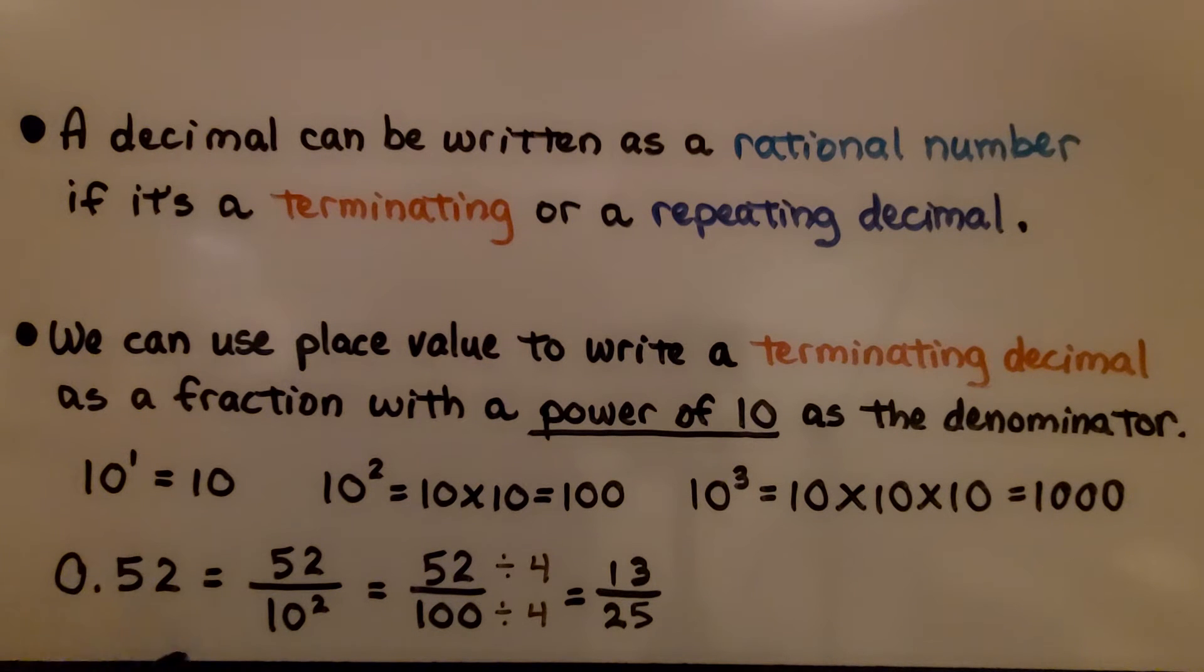Here we have 0.52, that's 52 hundredths. So, it's like saying 52 as the numerator and 10 to the second power is the denominator. That would be 52 hundredths. We can divide the numerator and denominator by the greatest common factor, 4, and get 13 25ths in simplest form.